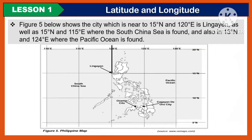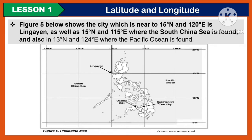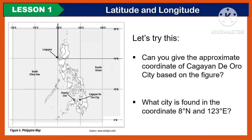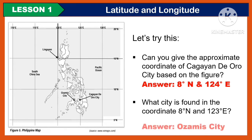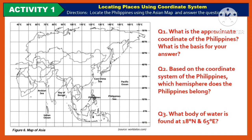Figure 5 shows the city which is near 15 degrees north and 120 degrees east, which is Lingayen, as well as 15 degrees north and 115 degrees east, where the South China Sea is found, and also 13 degrees north and 124 degrees east, where the Pacific Ocean is found.